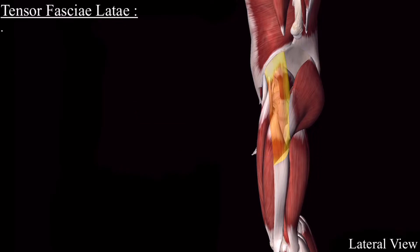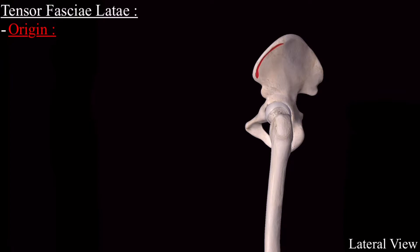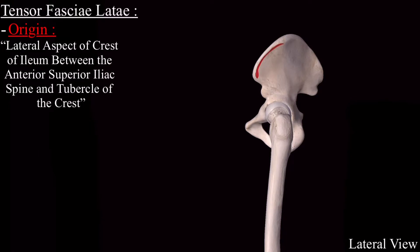Now we come to the origin of the tensor fasciolata. It originates from the lateral aspect of the crest of the ilium, between the anterior superior iliac spine and the tubercle of the crest.